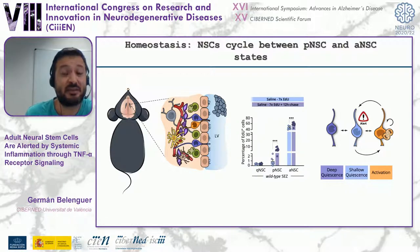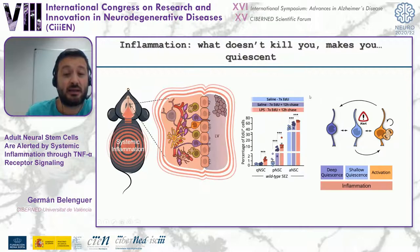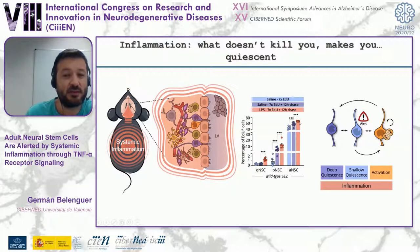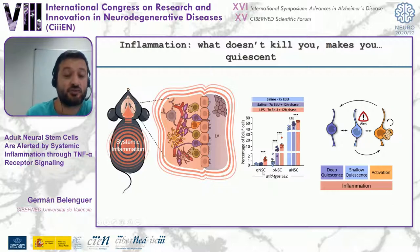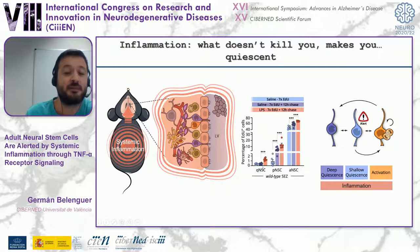What about systemic inflammation? If you induce systemic inflammation by LPS and apply the same paradigm, you see more cells have proliferated in the first 12 hours, but now many of these cells are going back not only to a primed state but also to a deep quiescent state — something that never happens under homeostatic conditions. These results demonstrate that cells after activation can go to deep quiescence, and explain why we observe more quiescent stem cells when inducing systemic inflammation.